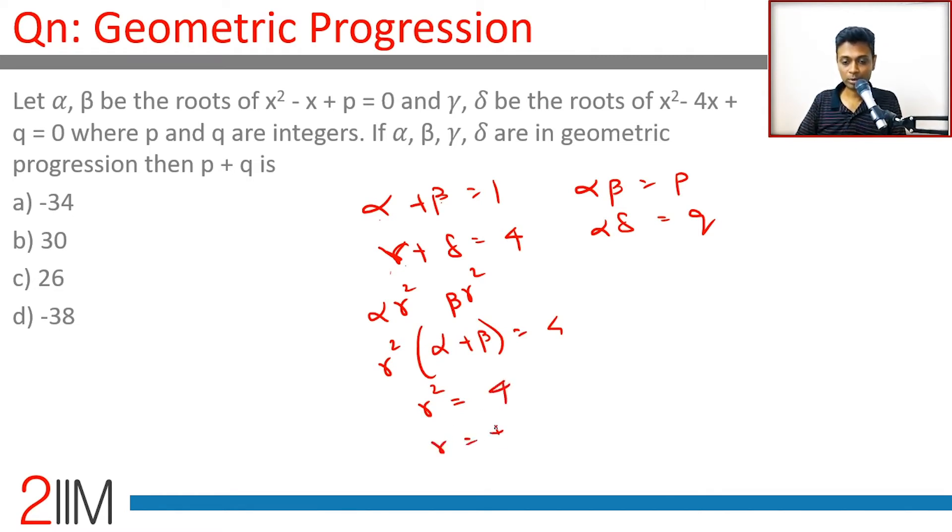Common ratio is plus or minus 2. Brilliant. So the ratio is plus 2 or minus 2, one of the two.